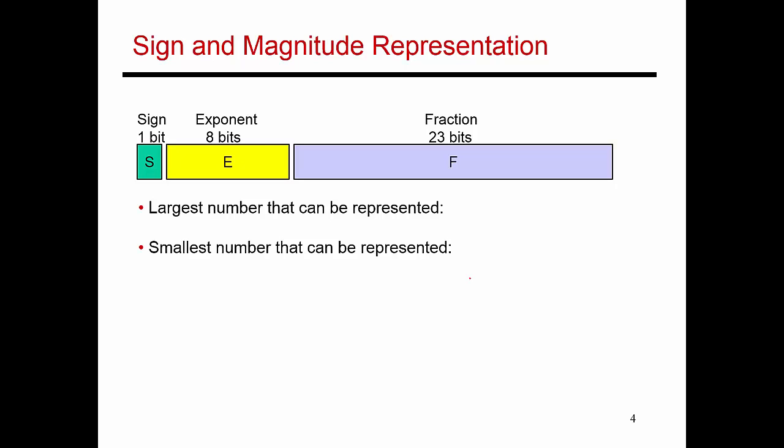So the largest magnitude number is basically 1 plus the fraction bits all being 1s. So if you add them up, you get a number which is not quite 2 but very close to 2. So let's just roughly say that all of these added together gives me the value 2. So this multiplied by the largest exponent, which we said was 2 to the power 128. So this is a fairly big number.